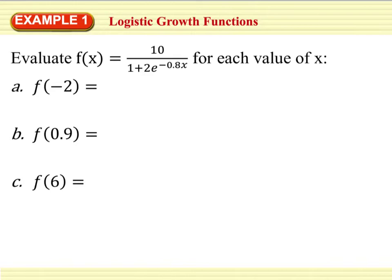So the first part, which is part a, says we're going to evaluate the function at negative 2. So we're going to end up with 10 divided by 1 plus 2e to the negative 0.8 times a negative 2. And when you type that in, you should end up with something around 0.917.